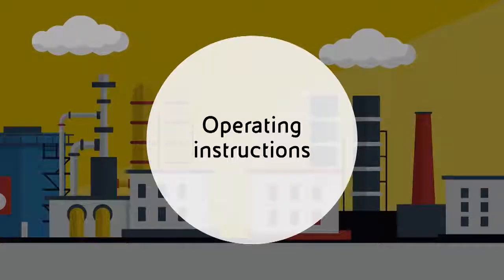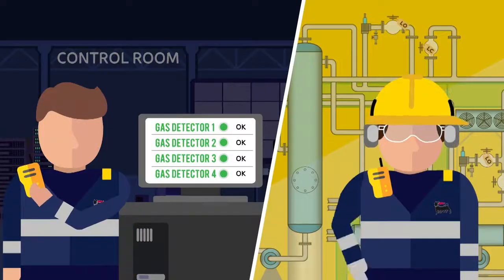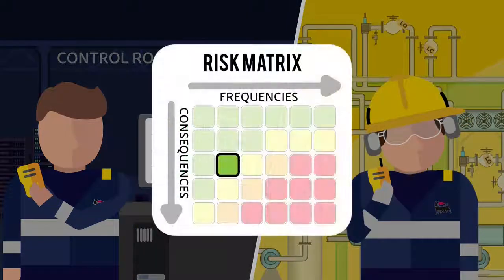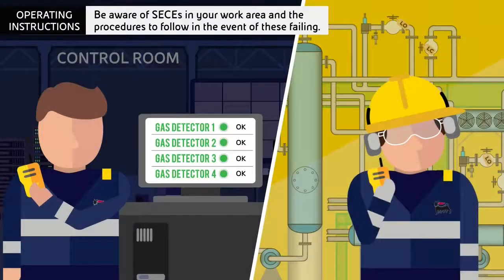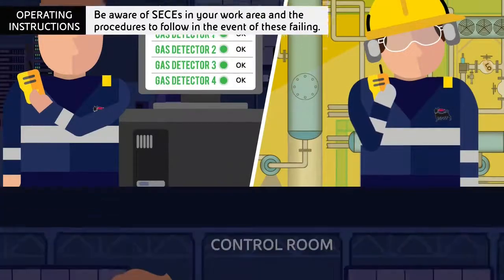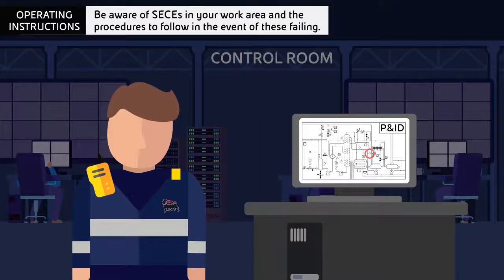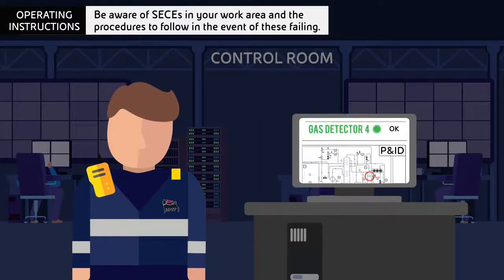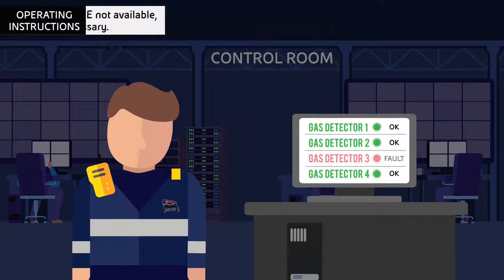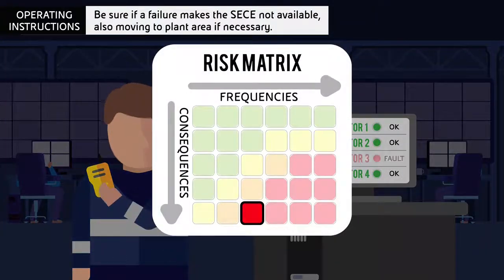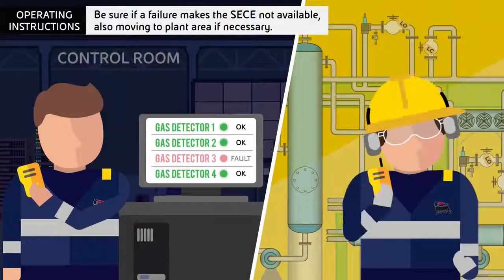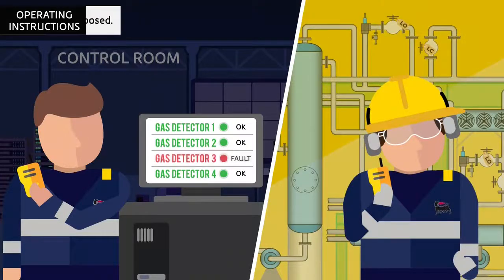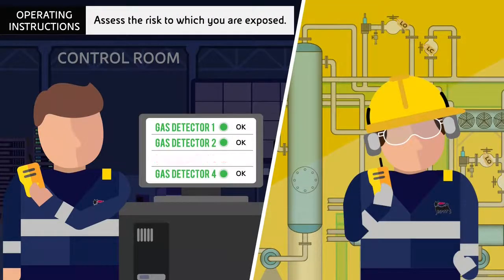Operating Instructions. Be aware of CCs in your work area and the procedures to follow in the event of these failing. Be sure to verify if a failure makes the CC unavailable, moving to the plant area if necessary, but always assessing the risk to which you are exposed.